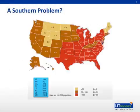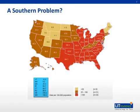This map shows the number of gonorrhea infections reported per 100,000 people in each state. The red areas are the most prevalent areas, and as mentioned, they are mostly in the southeast United States. Our home, North Carolina, is actually fifth in the nation in terms of gonorrhea infections.